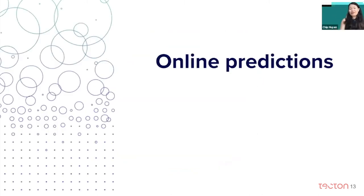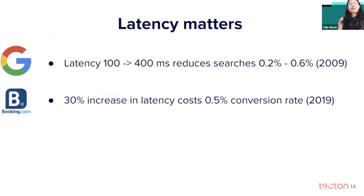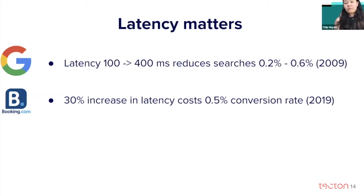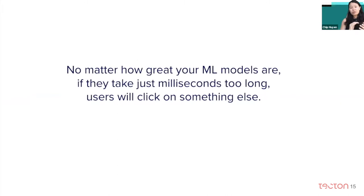Let's go to the first level: online predictions. If you have built any kind of system for users, everybody knows that latency matters a lot. There has been a lot of research done to highlight the impact of latency. One study by Google found that back in 2009, if you increase latency from 100 to 400 milliseconds, you can reduce searches by 0.2% to 0.6% per user. And Booking.com found that if you increase latency by 30%, you can reduce conversion rate by 0.5%, which means a lot in terms of financial consequences.